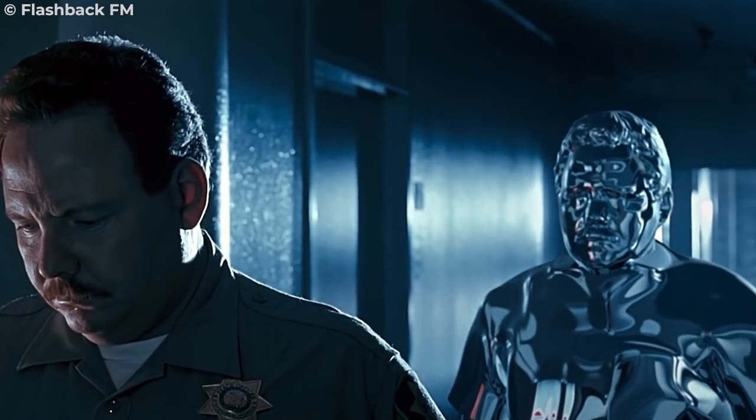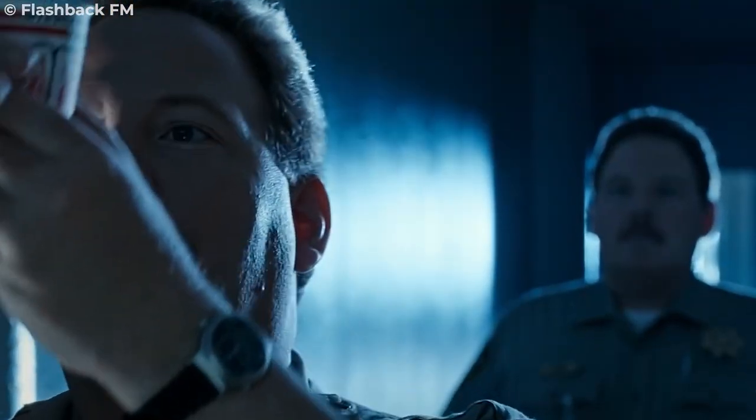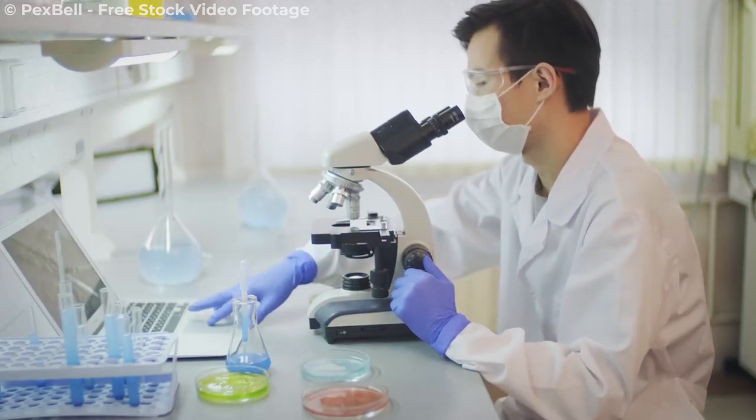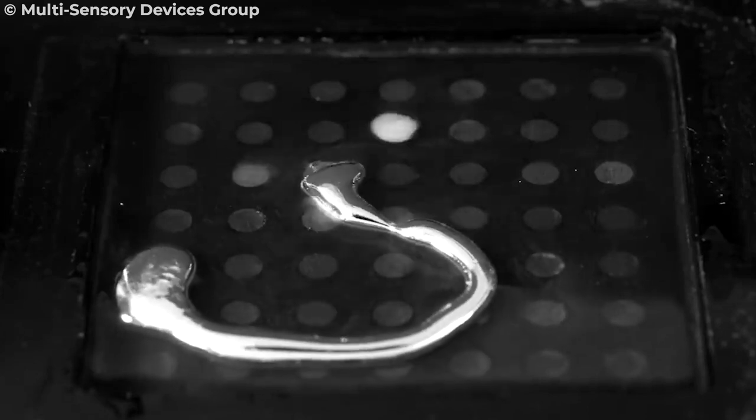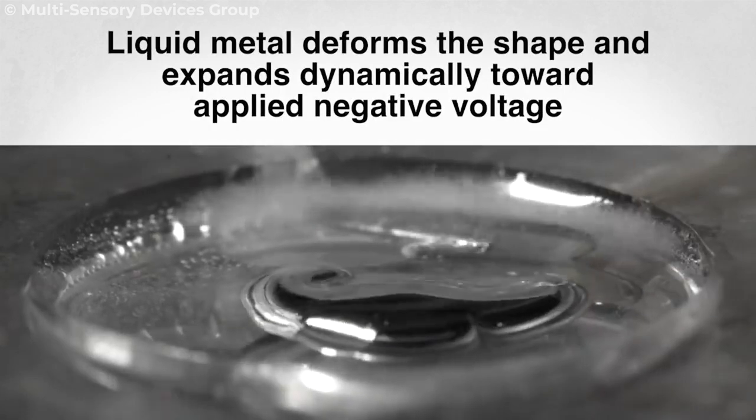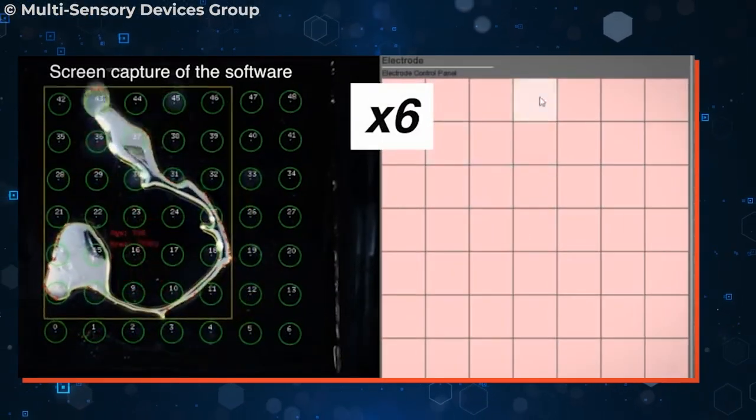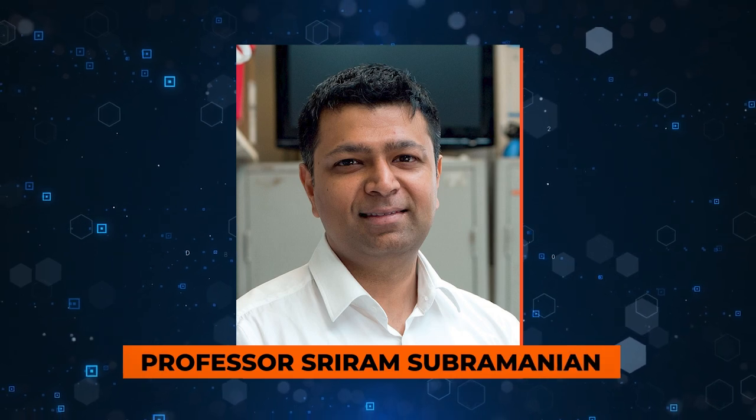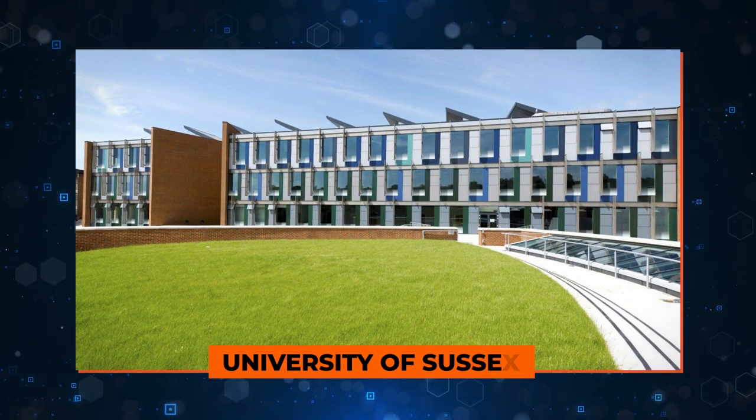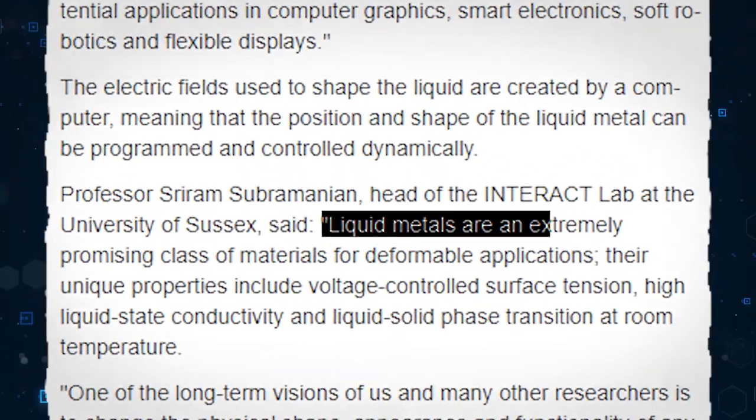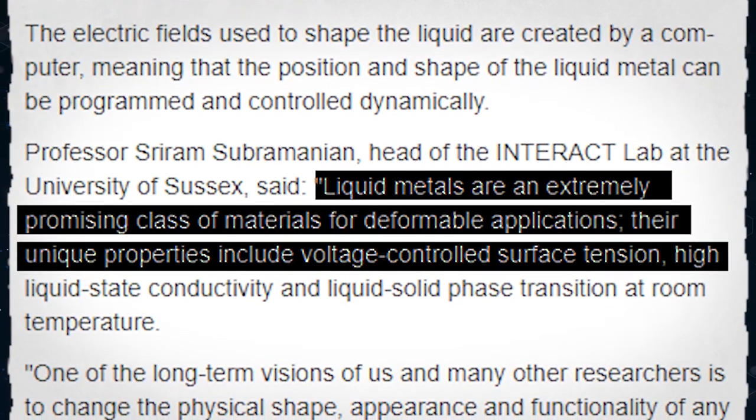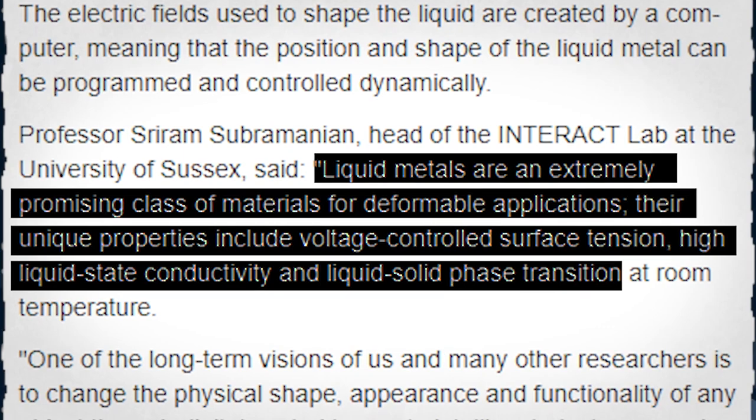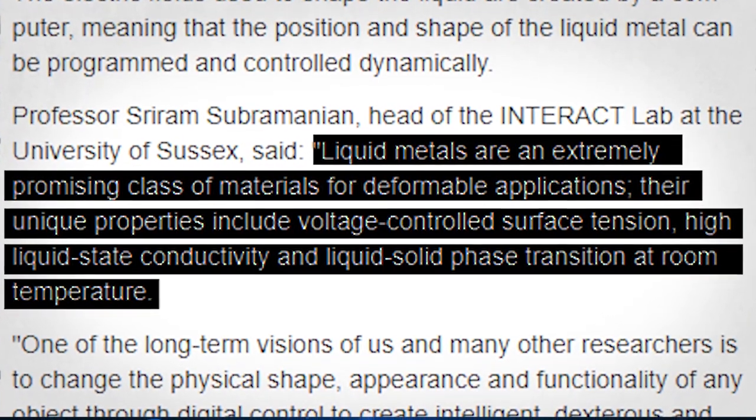But the shape-shifting substance saga doesn't just end there. It has been going on for a while. In 2017, scientists made a groundbreaking discovery in electronics, soft robotics, and flexible displays. They found a way to morph liquid metal into 2D shapes using an electrical charge, making it possible to program and control the position and shape of the liquid dynamically. Professor Sriram Subramanian, head of the Interact Lab at the University of Sussex, explained: liquid metals are an extremely promising class of materials for deformable applications. Their unique properties include voltage-controlled surface tension, high liquid state conductivity, and liquid-solid phase transition at room temperature.